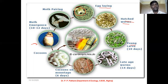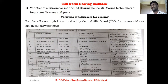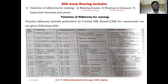Chapter Number Six, silkworm rearing, includes the following four points: first, selection of varieties of silkworm for rearing; second, the rearing house; third, rearing technique; and fourth, important pests and diseases of silkworm.